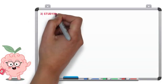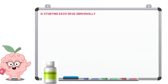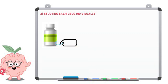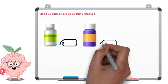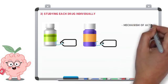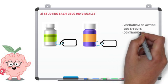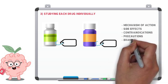Number three, studying each drug individually. The other mistake that students will often make is to study each drug individually, including its mechanism of action, all the side effects, contraindications, precautions, brand name, and indications.